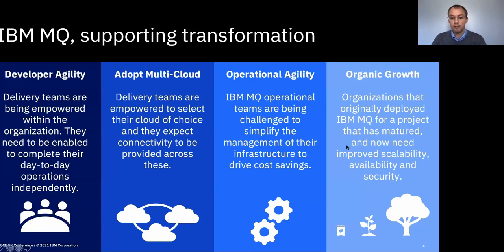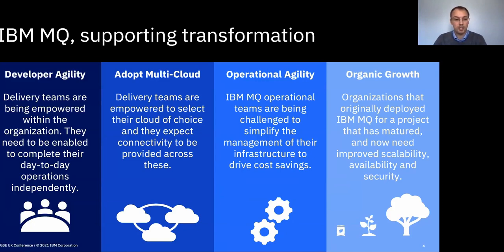We see four main themes around what's happening. The first is developer agility, which is becoming more and more important. Rather than having traditional teams in your infrastructure groups managing the entire estate, we're seeing more and more delivery teams in lines of business being empowered and asked to actually do the changes they need themselves, pulling in automation and operations to better react quickly to changing market needs.